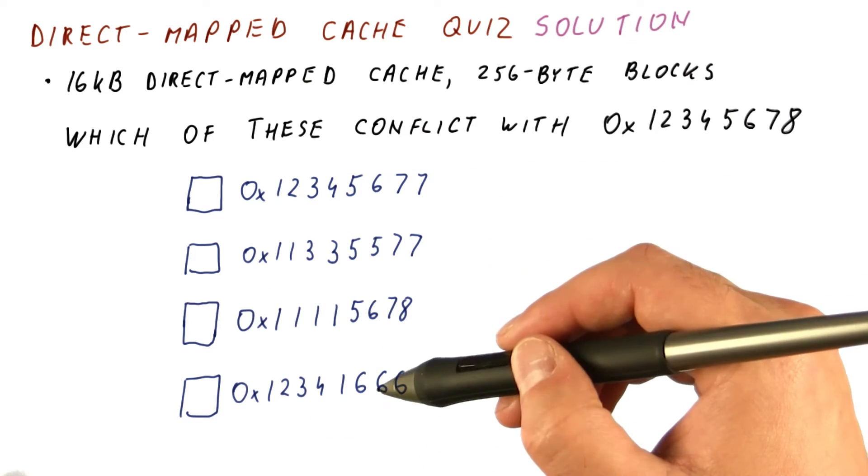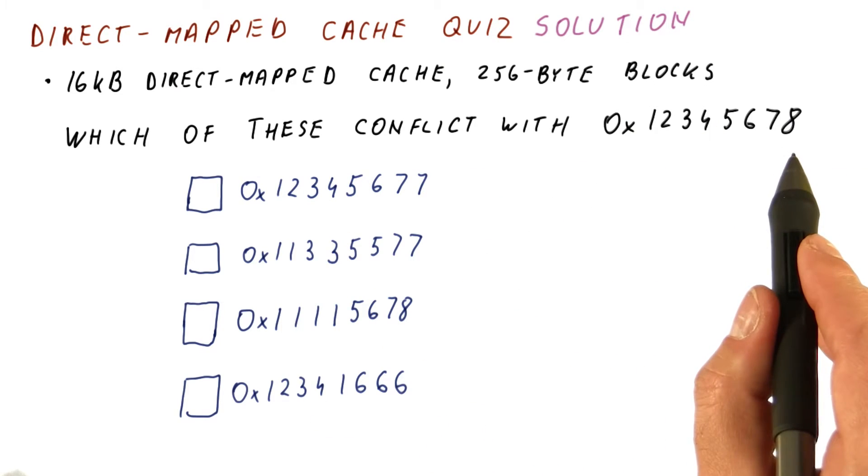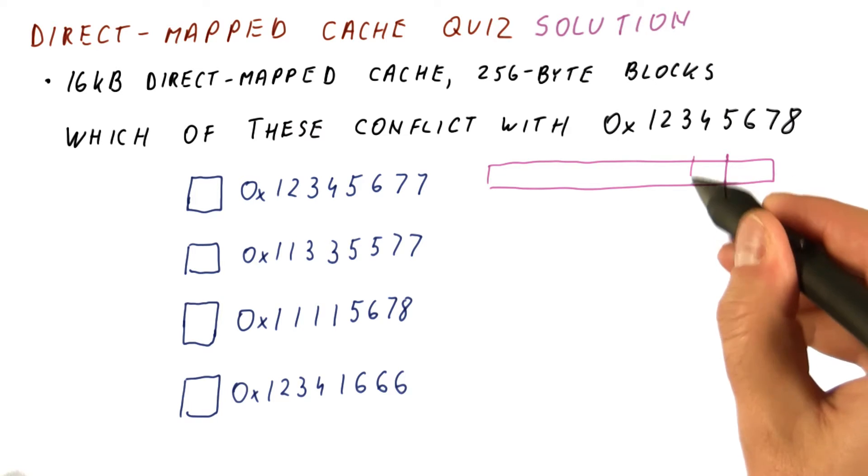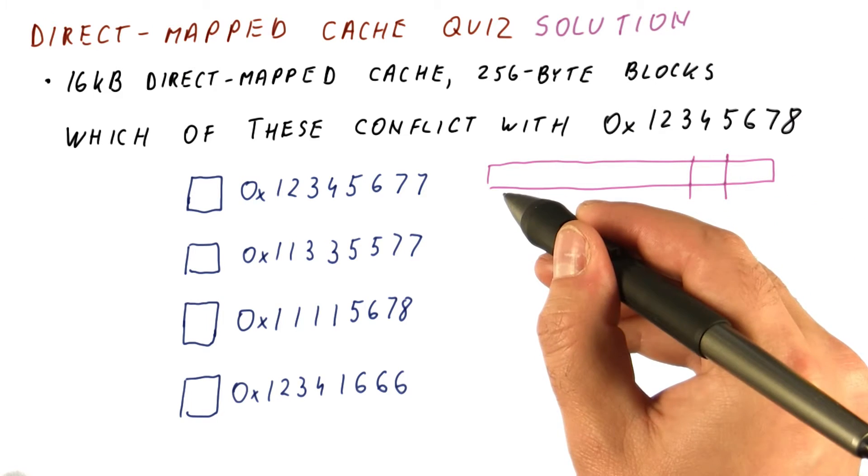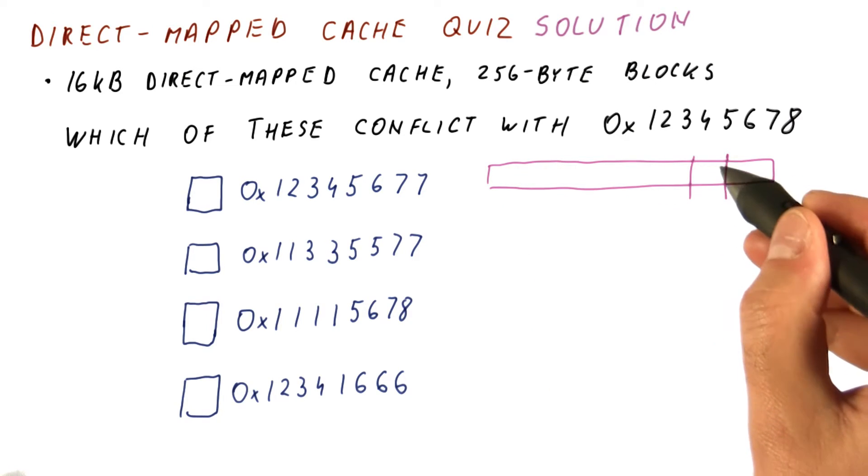The key to solving problems like this is to figure out how the address breaks down into offset, index, and tag bits. Conflicts will occur where different blocks have the same index bits.